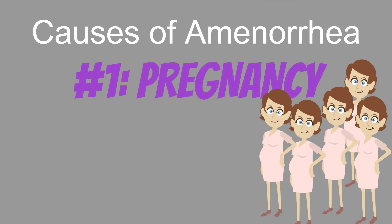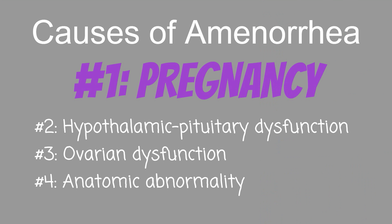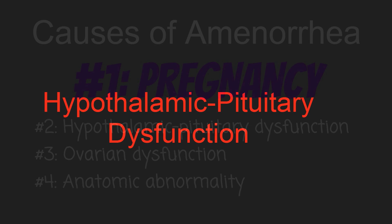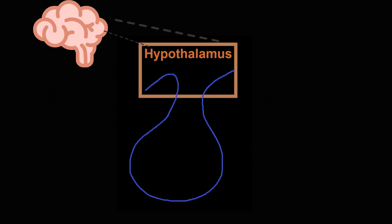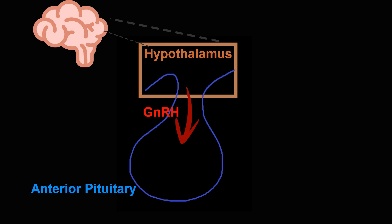The three most common causes of amenorrhea not from pregnancy are hypothalamic-pituitary dysfunction, ovarian dysfunction, and anatomic abnormalities. Let's begin with a quick tutorial about the HPO axis. The hypothalamus releases GnRH in a pulsatile fashion, and this travels to the anterior pituitary via the pituitary stalk.